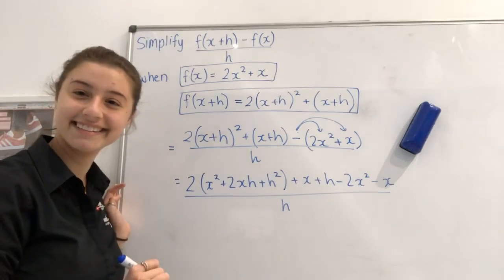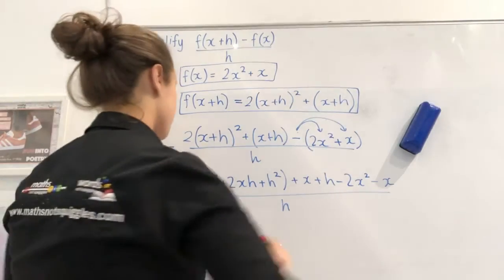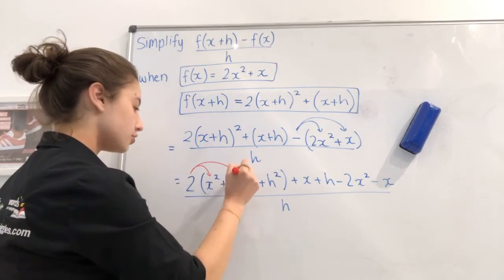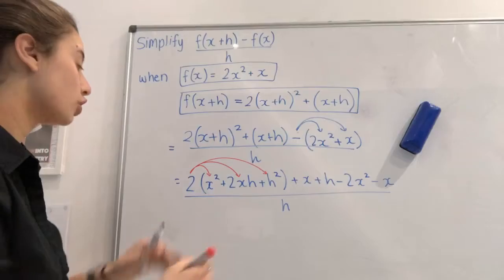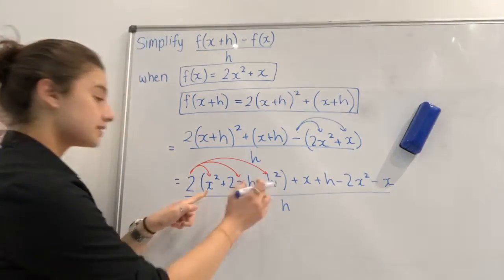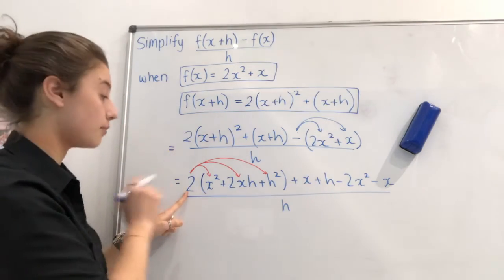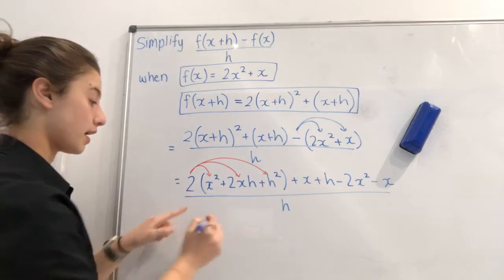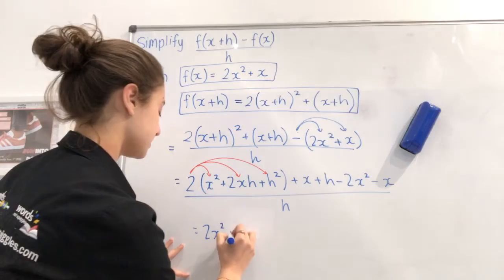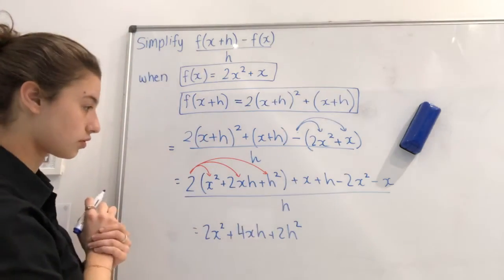Any questions? Awesome. So now let's expand by multiplying everything in this bracket by 2. Usually we only see 2 terms inside a bracket when you're multiplying by something on the outside, but it's the exact same thing when there's 3 terms inside a bracket. So we're just going to write 2x squared plus 4xh plus 2h squared.